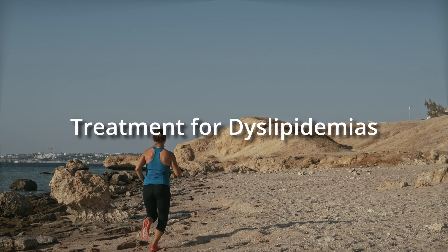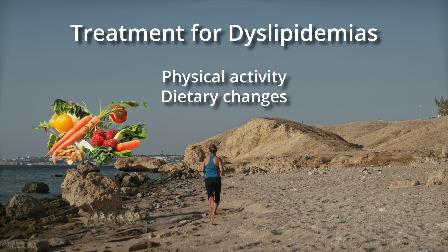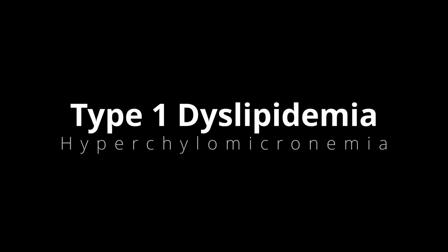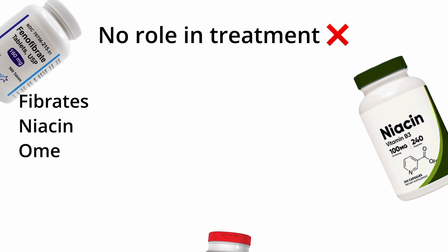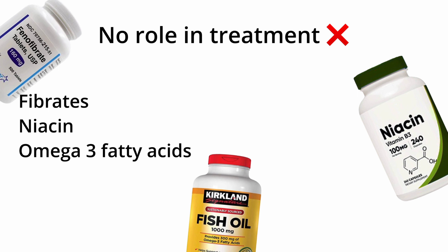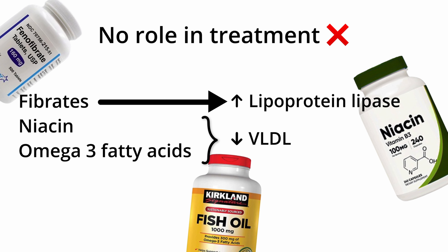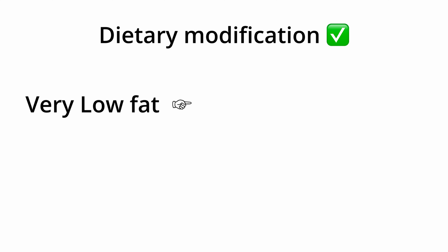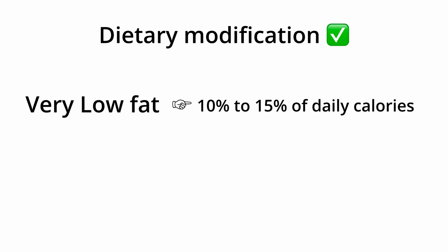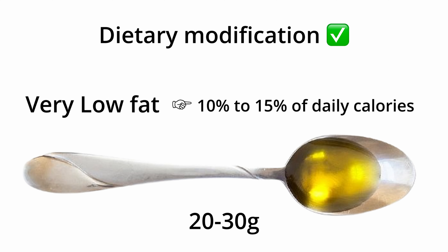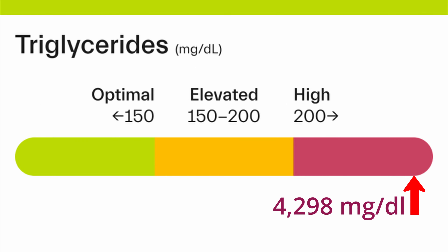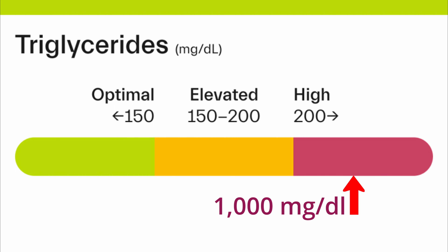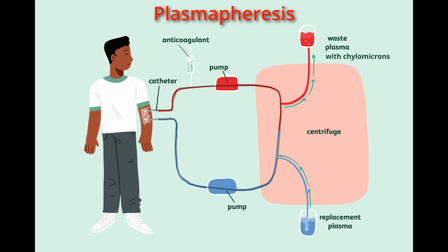Exercise plays a huge role in increasing blood HDL levels. Thus, the treatment for all types of dyslipidemia includes physical activity, along with a healthy diet, quitting smoking, and avoiding alcohol. In type 1 dyslipidemia (hyperchylomicronemia), lipid-lowering therapy such as fibrates, niacin, and omega-3 fatty acids has little to no role, as they act either by decreasing VLDL or increasing lipoprotein lipase activity. Dietary modification is the mainstay, with a very low-fat diet — fat intake of less than 10–15% of daily calories, no more than 20–30 grams of fat per day — to maintain triglycerides below the threshold for acute pancreatitis, below 1,000 mg/dL. Plasmapheresis may be needed in acute complicated pancreatitis.